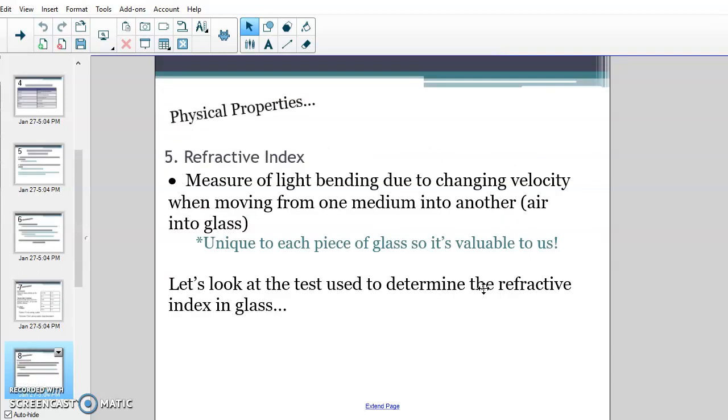The fifth characteristic is refractive index. This is probably a new characteristic for lots of you guys. Refractive index is the measure of light bending due to changing velocity when it goes from one medium into another. In this case, the light is traveling through the air and it hits the glass. And as it hits it, it slows down - it's going faster in the air than in the glass. So it slows down, and as it slows, it bends the light. And that is what we call the refractive index. And that is unique to each piece of glass, so it's super valuable to us. So we're going to take a look at how to actually complete that test.